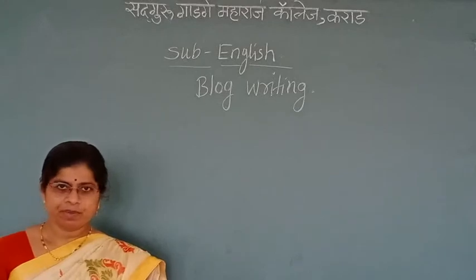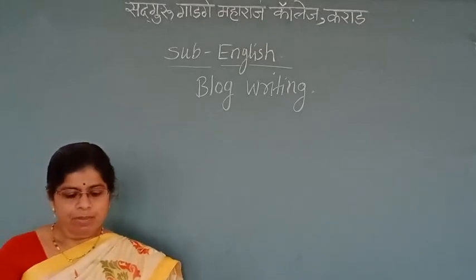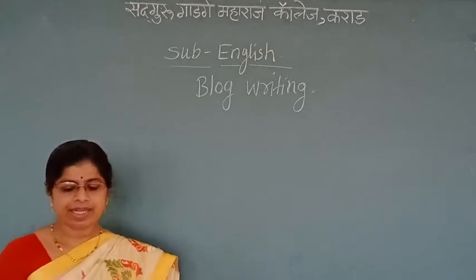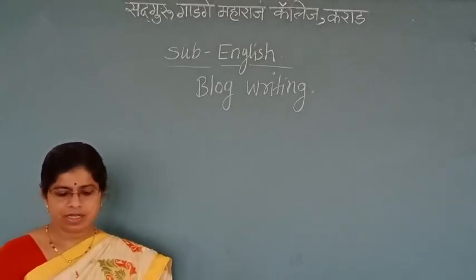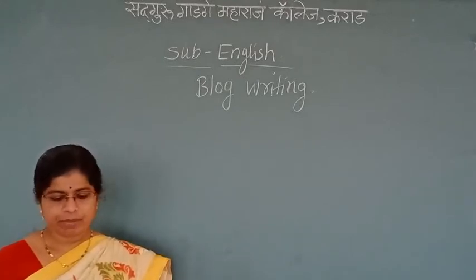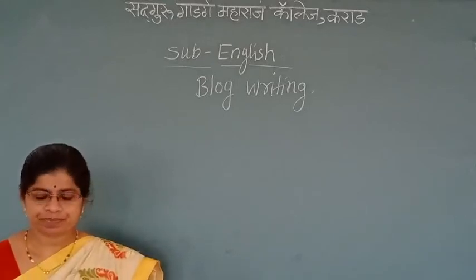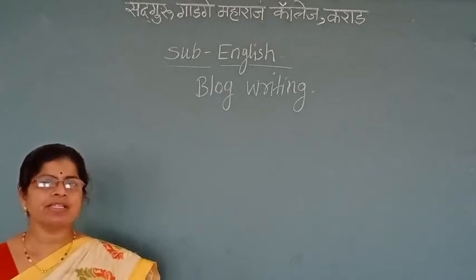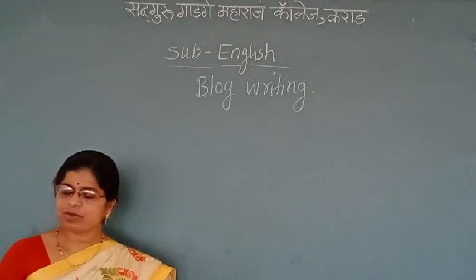Let me tell you what a blog is. If you have books, you can see on page number 102 or 103, 11th standard. A blog is a shortening — we can call it a web blog. It is an online journal or informational website displaying information in reverse chronological order, with the latest posts appearing first. It is a platform where a writer or even a group of writers share their views on an individual subject. Each entry is called a post. This is also called a part of social media.